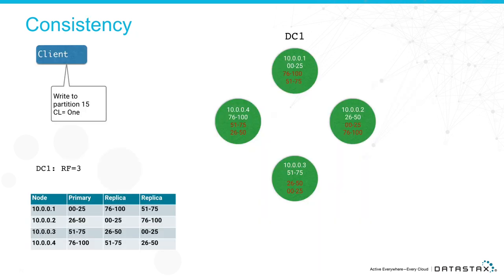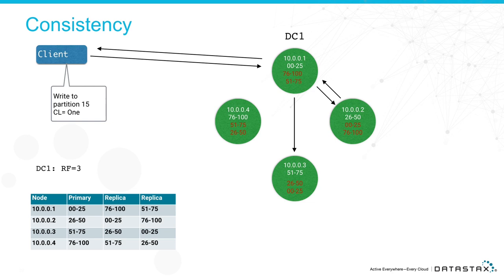With consistency level ONE, the client writes to partition 15 — it still writes to all three nodes, but the fastest node returns a really fast write acknowledgment. I've seen some ridiculously fast writes because of the way it writes. I'll show you how it writes to disk in a minute, but this is how you get that sub-millisecond write SLA.